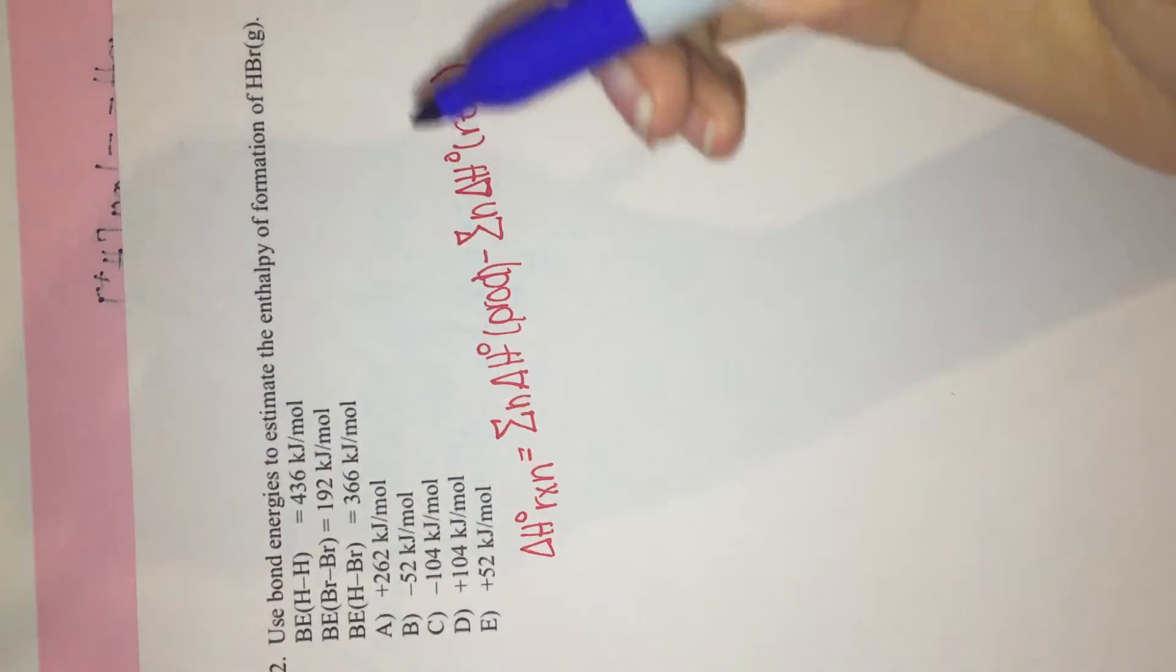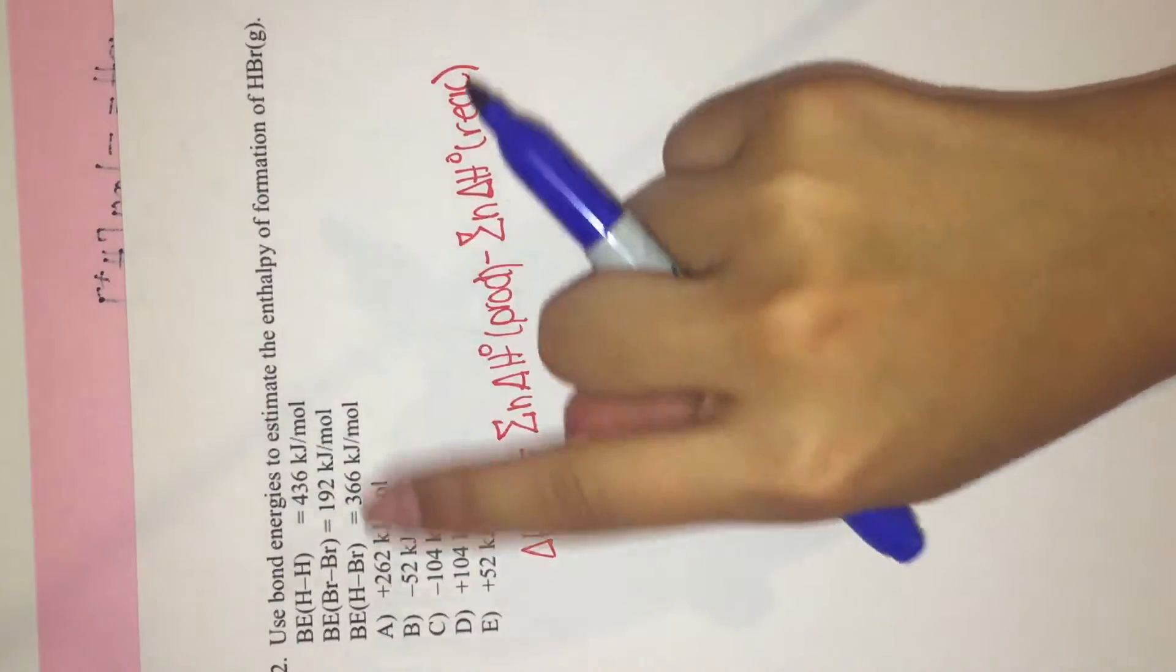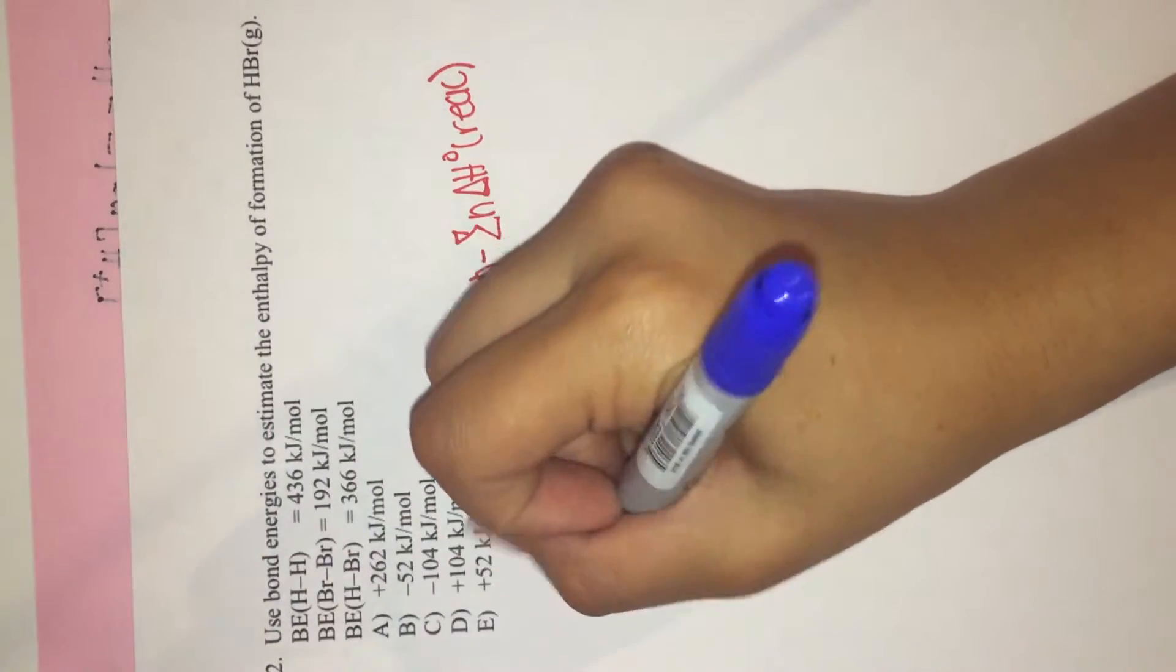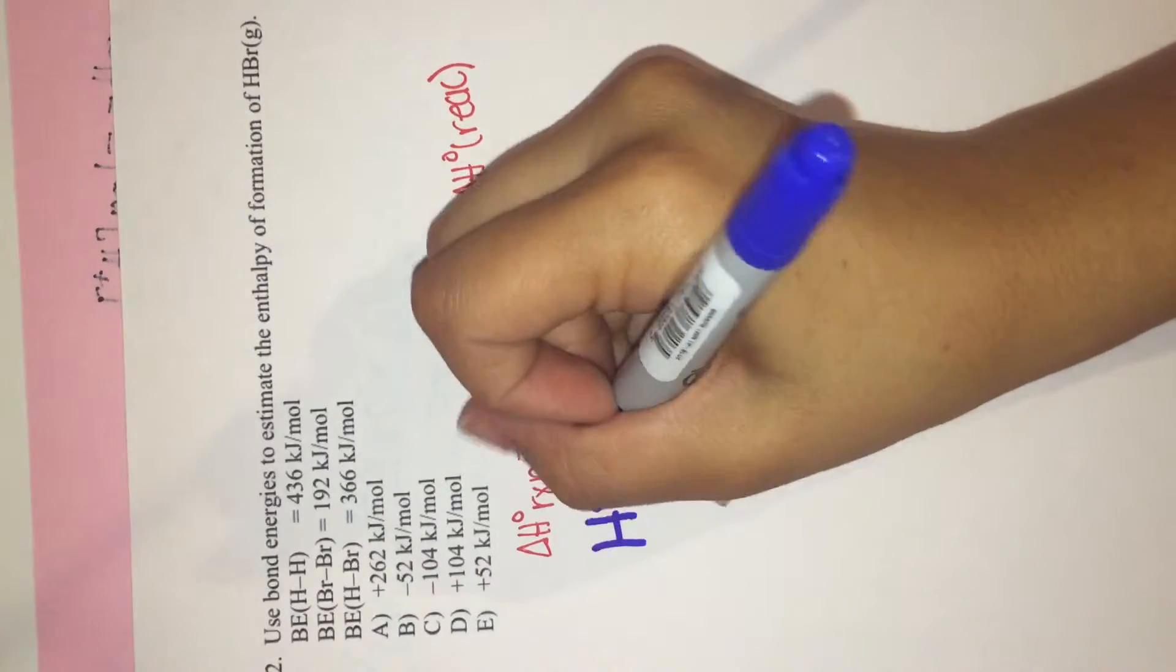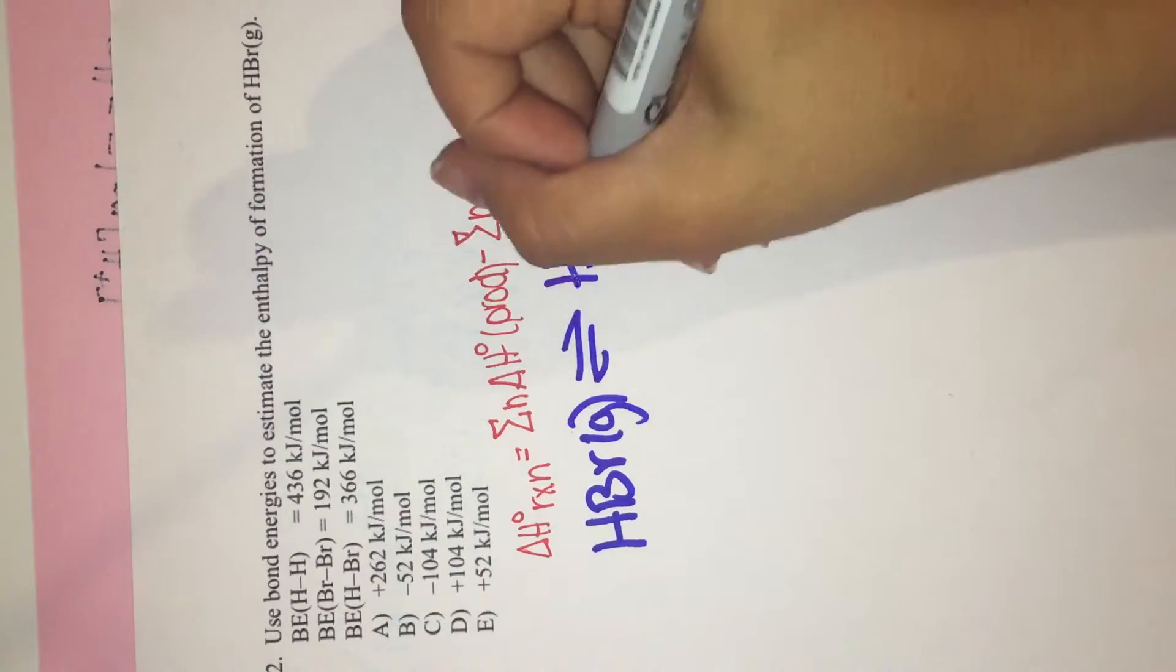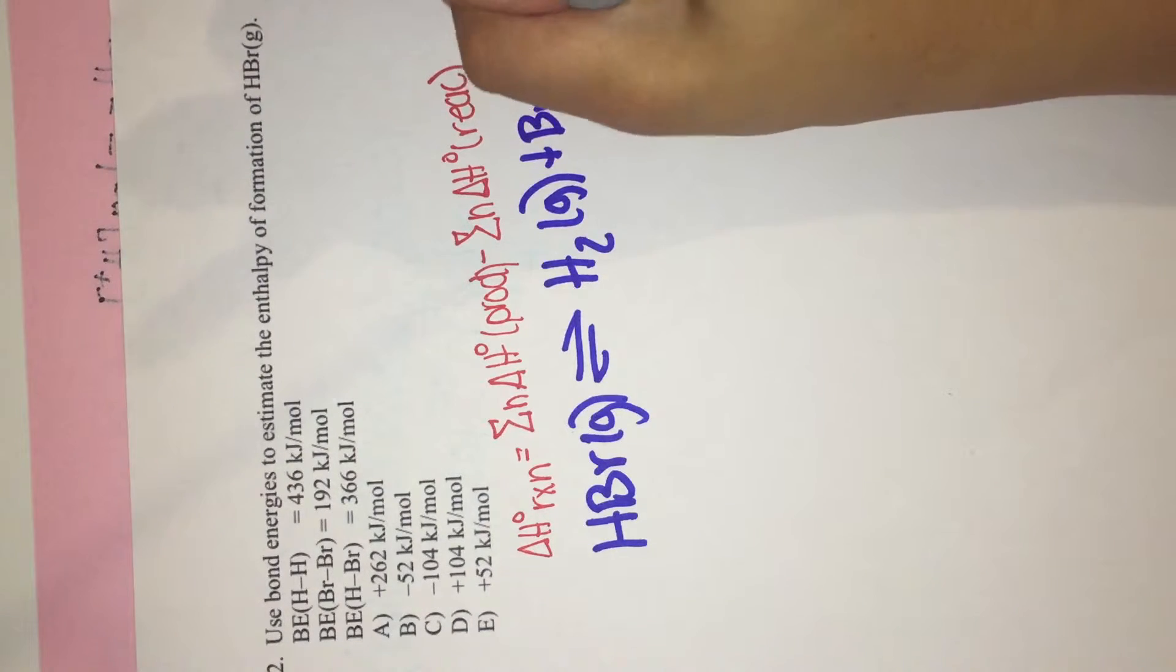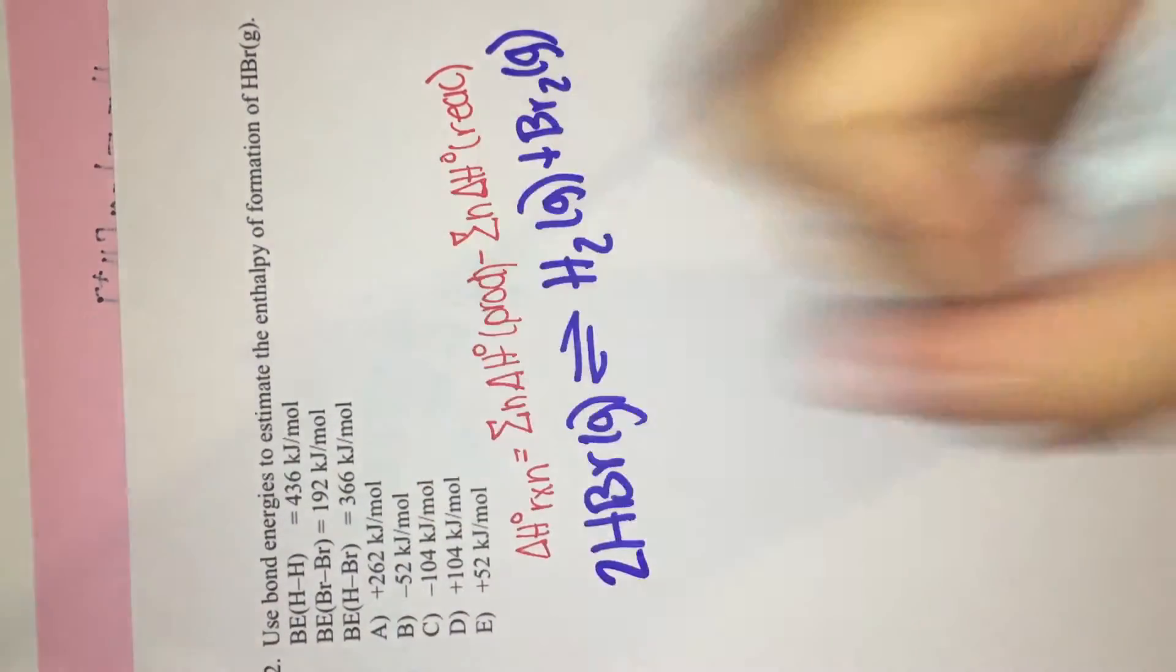We're plugging in the equations. We make the equation which is 2HBr gas equals H2 gas plus bromine gas. So we balance it and we have to have two of these.